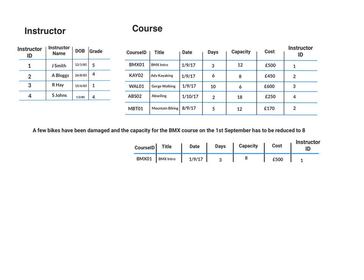Let's look at a quick example where we're just going to update a single record. A few bikes have been damaged and the capacity for this course, which usually takes 10, has to be reduced. We'll highlight the value we're going to change.